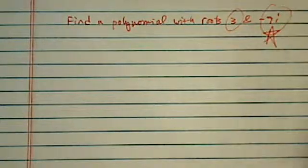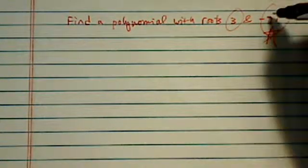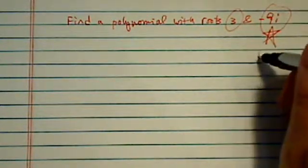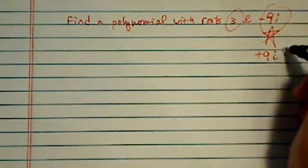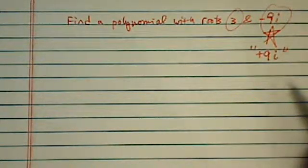The trick is here, when they give you a complex root, it's understood that its conjugate, what we call the twin, is also a root.